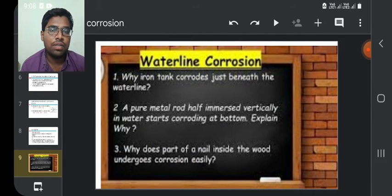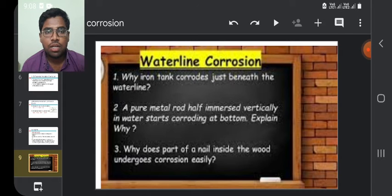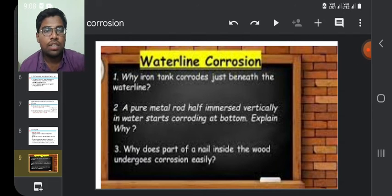Waterline corrosion. Some examples. Why does an iron tank corrode just beneath the waterline? A pure metal rod half immersed vertically in water starts corroding at the bottom. Explain why. Why does the part of a nail inside the wood undergo corrosion more easily than the outside? Let's see in detail.